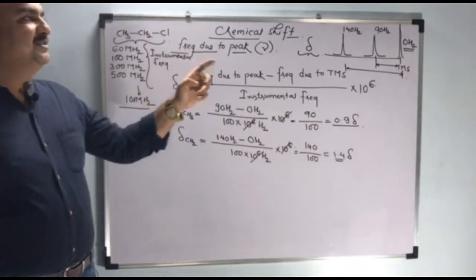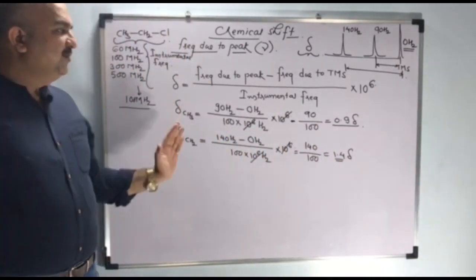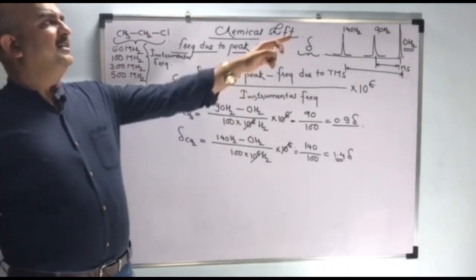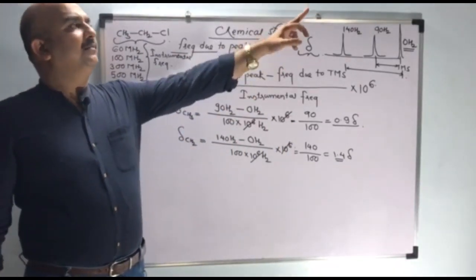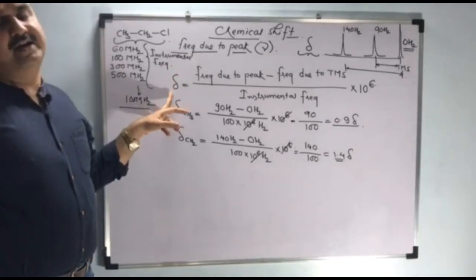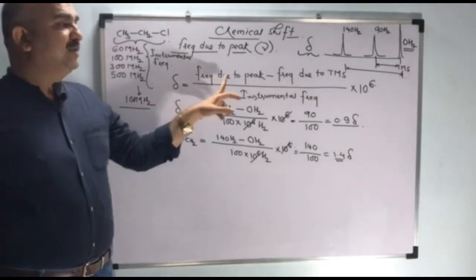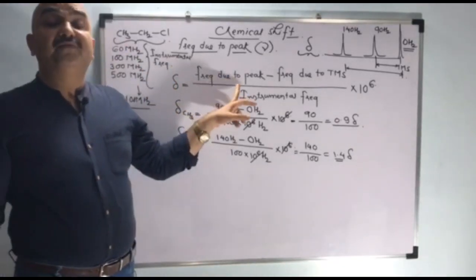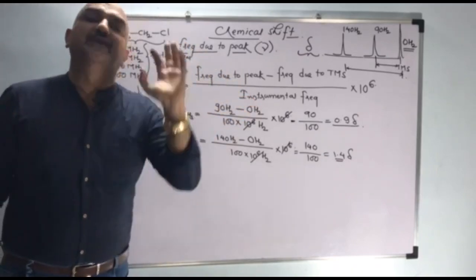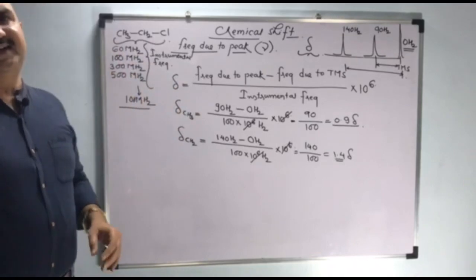This is the most important thing. How to find out the chemical shift: by using this formula, if you know the frequency due to a peak you can find out the chemical shift value. And if you know the chemical shift, you can find out at which frequency it is resonating.